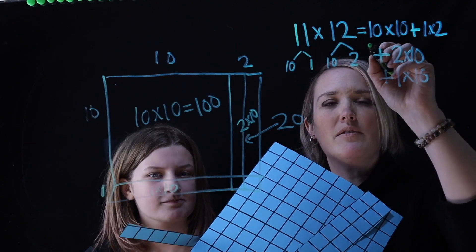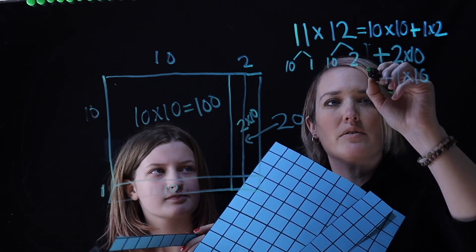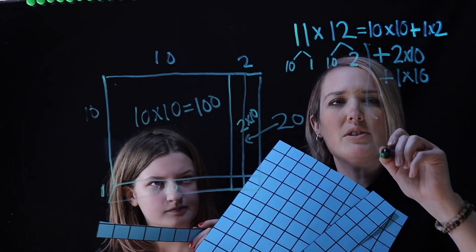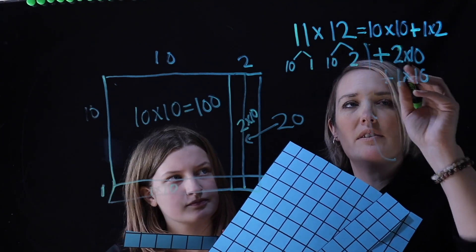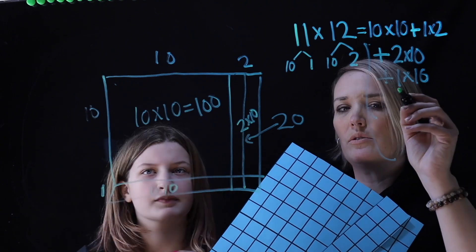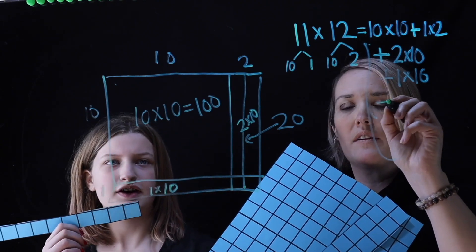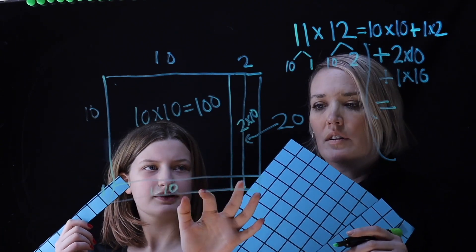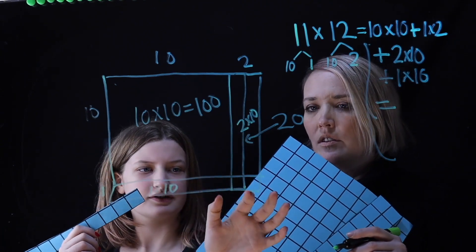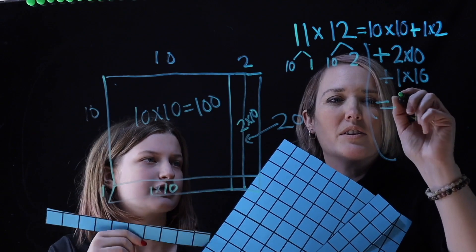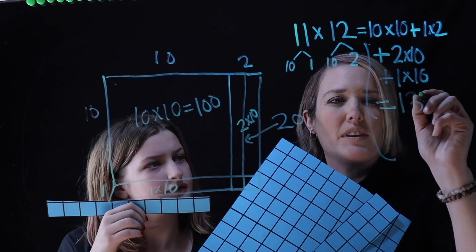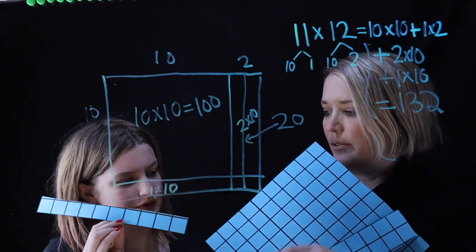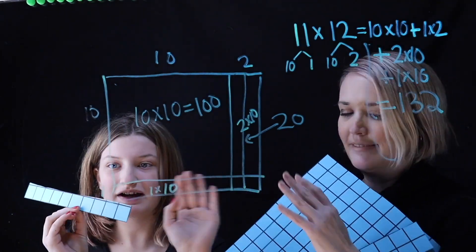So we've got all of this going on. What should they have got instead of 102? They should have got 132. 132. That was awesome, Anna. Great job. Thanks. Bye, everyone.